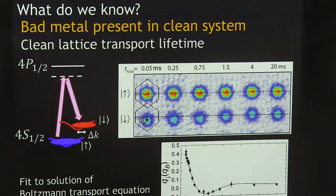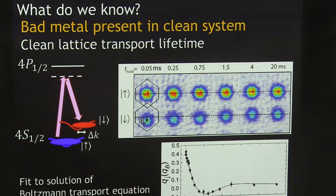That time is the time which goes into, for example, a Drude model of resistivity — which is also equivalent to every other version of resistivity. There's always a time in there which is the key element in any resistivity measurement.